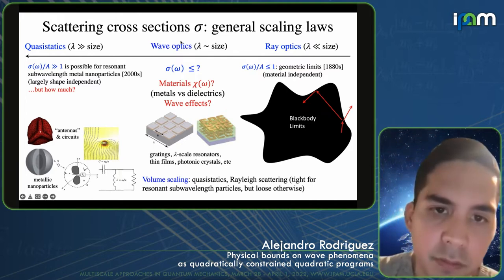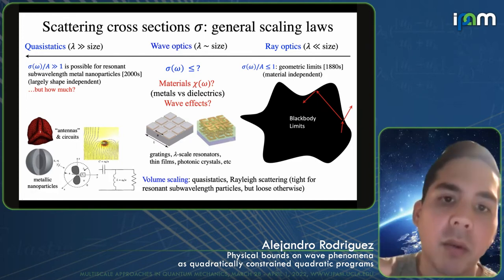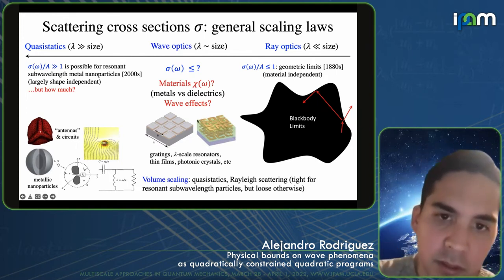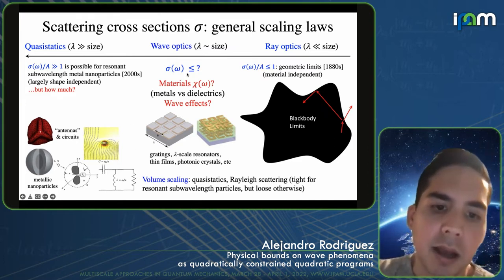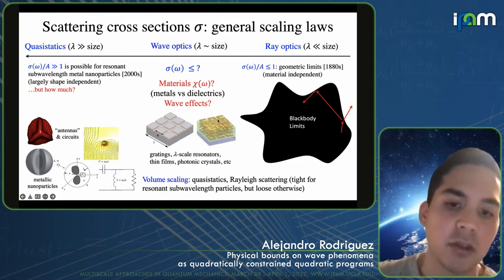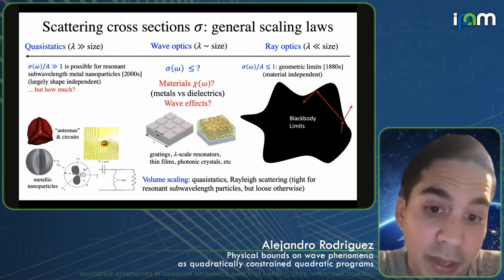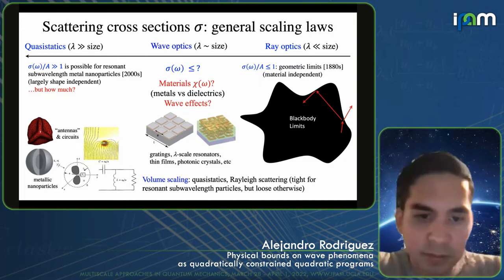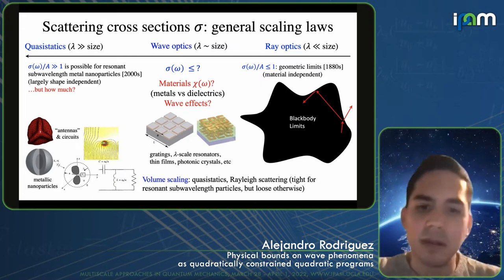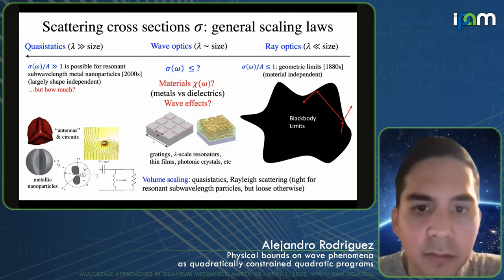More generally, you can ask: what if you're in the regime of wave optics — Fourier optics — where the wavelength is on the order of the size of the objects? Then there are much more complicated effects at play. The question we want to ask is: how do we put limits on these cross-sections given knowledge of the materials — the susceptibility or maximum potential — and that incorporate all kinds of potential wave effects such as band gaps, quasi-periodic confinement, and so on?